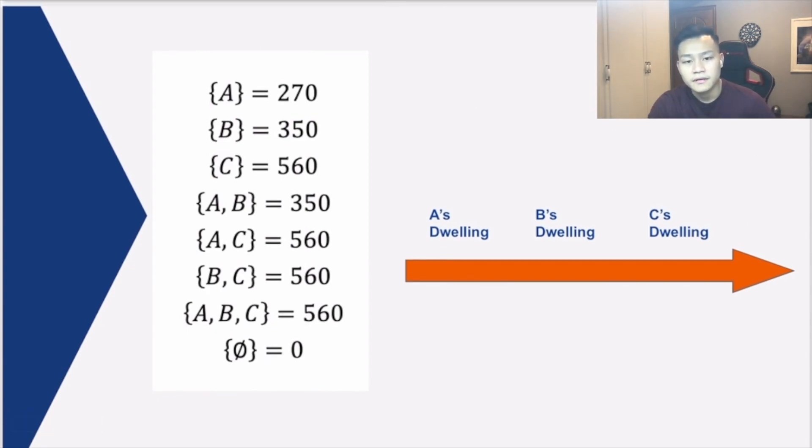We're trying to classify for each Alice, Bob, and Catherine, we're trying to classify their taxi costs into different subsets. For set A, B, C, it's fairly simple. It's just Alice, Bob, and Catherine themselves. For set A, the value associated is 270 NTD, which is the cost of taxi that Alice would have to pay.